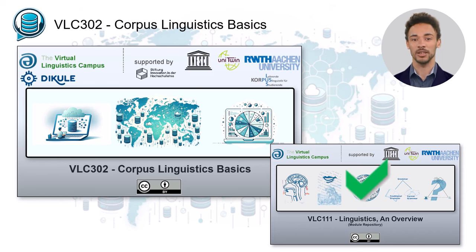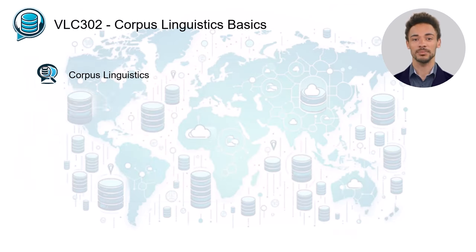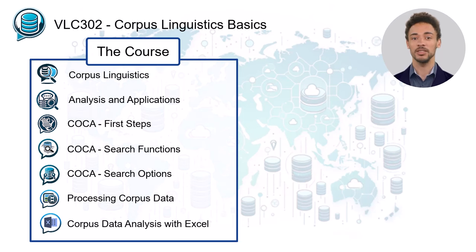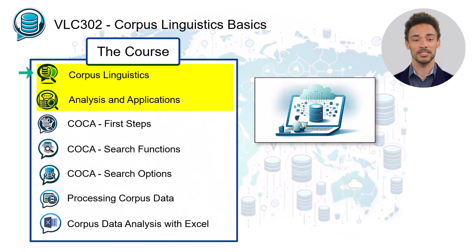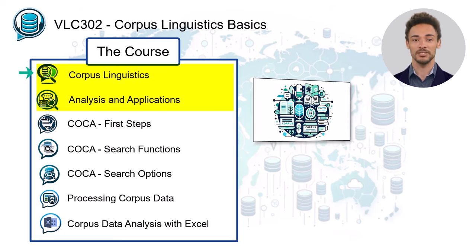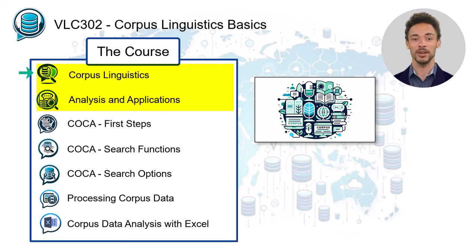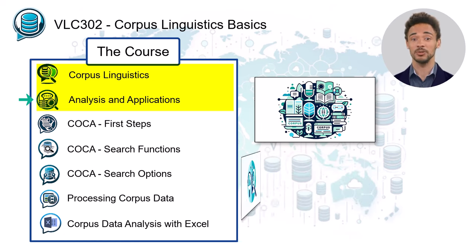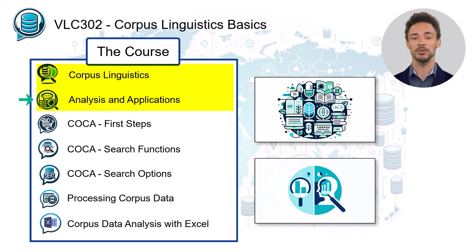But let's now look at the content of VLC 302. The course consists of seven units, starting with two theoretical ones: a unit that discusses corpus linguistics as a methodological approach presenting different types of corpora, and a unit that introduces the main applications of popular corpora and the approaches towards the analysis of corpus data.